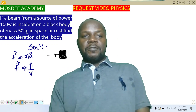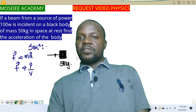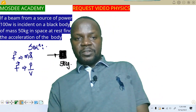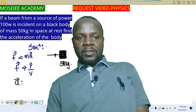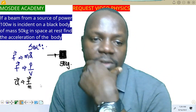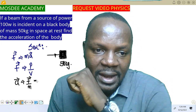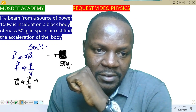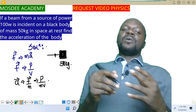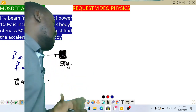We are told that the mass of this body is 50 kg and the body is at rest. So using the formula acceleration = F/m, and substituting F = P/V, we can now say: acceleration = P divided by (m × V). So directly, the acceleration equals power all over mass times velocity.